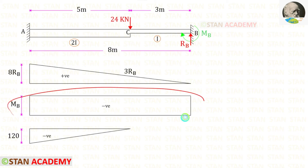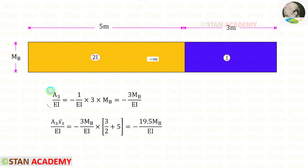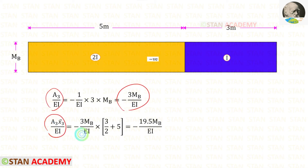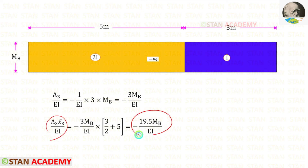Now let us take the rectangle and keep the right side part as number 3. For Area 3 upon EI: it is a rectangle, and multiplying Mb by 3 gives the area. Since it is negative, Area 3 upon EI = −3Mb upon EI. For Area 3 × x̄3 upon EI, the centroid of a rectangle lies at its center, so 3/2 plus the remaining distance of 5 gives the centroid. We get −19.5Mb upon EI.